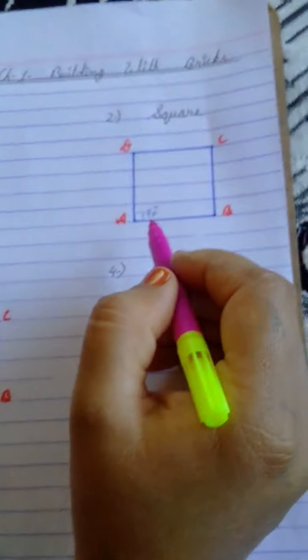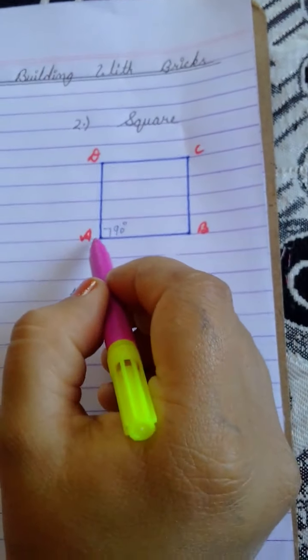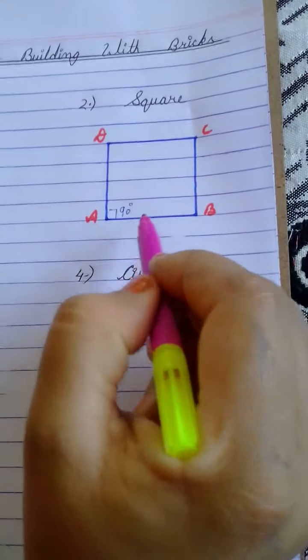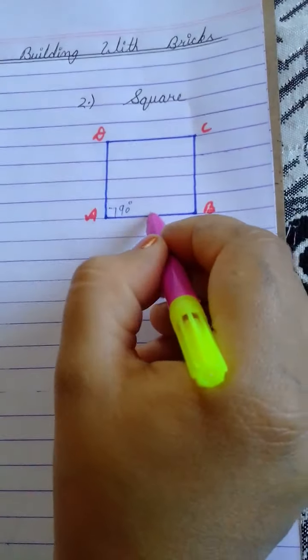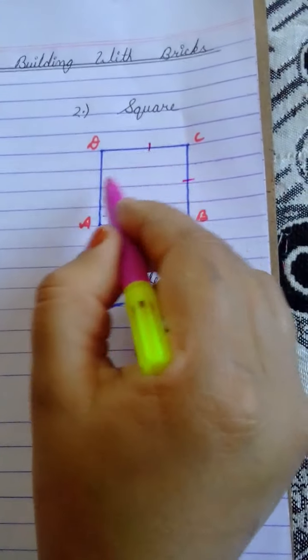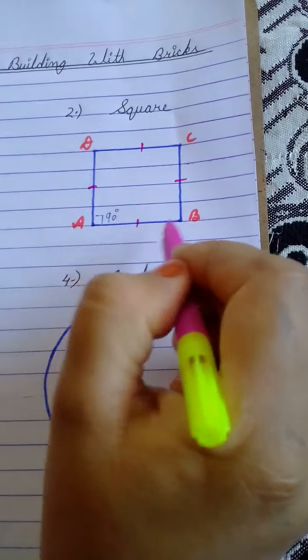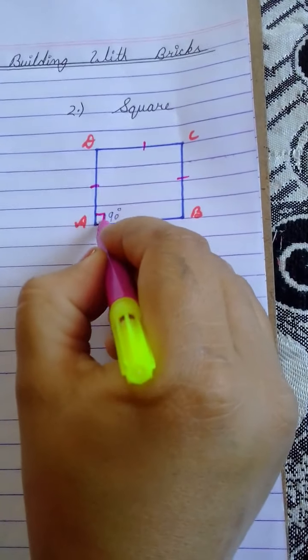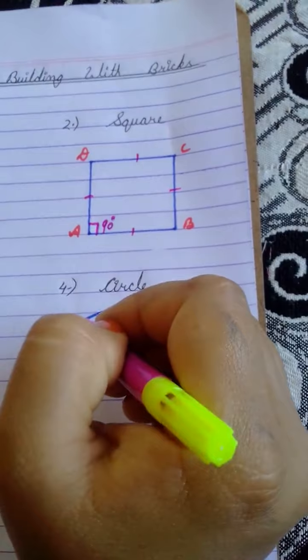Next is our square. A square is a four-sided closed figure whose all sides are equal. A, B, B, C, C, D, and A, D. All four sides are equal and each angle is 90 degrees.